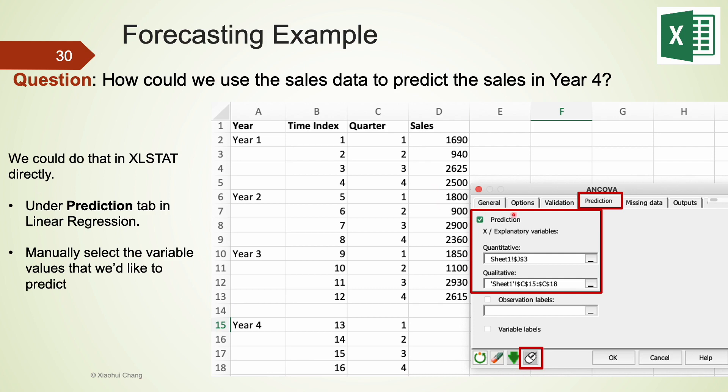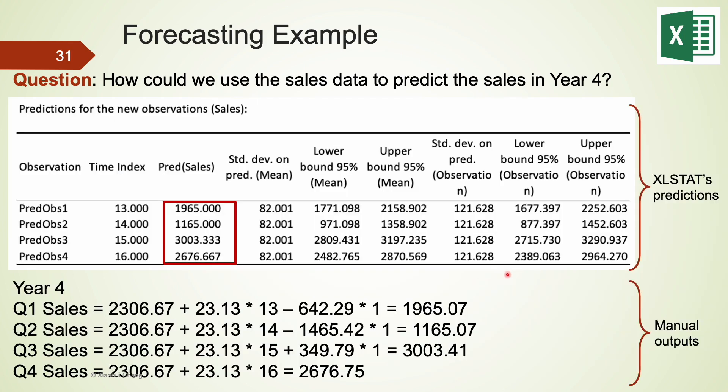In fact, these calculations can be done automatically in xlstat. We first enter the future observations we would like to predict in our spreadsheet. For our example, that includes the values for the time index variable, for year 4, and also the values for the quarter variable. Under the prediction tab for linear regression, we need to manually select these variable values for prediction as we have done here. As you can see on the screen, the xlstat predictions are identical to those outputs we calculated using manual plugins. But one advantage of using xlstat is that besides the point predictions, xlstat also give us confidence interval predictions.